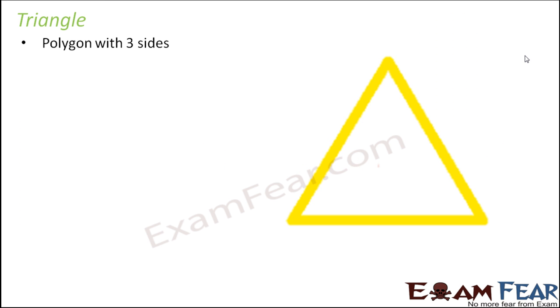How do we write a triangle? It is written as triangle ABC. Now, instead of writing triangle ABC, which is time-consuming, we have introduced this symbol so that it is easy to write and saves time as well.